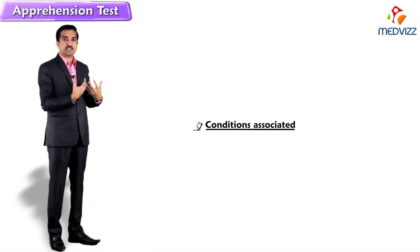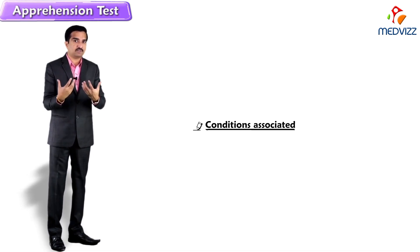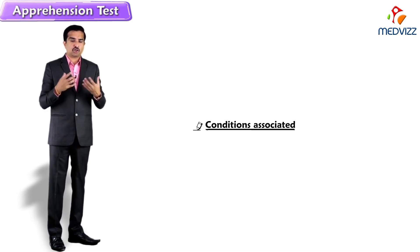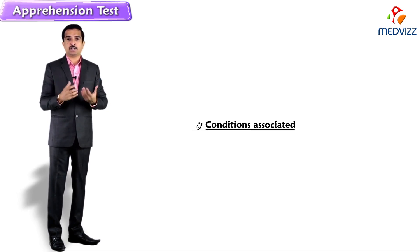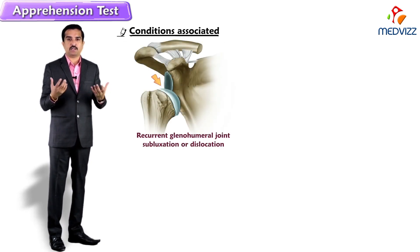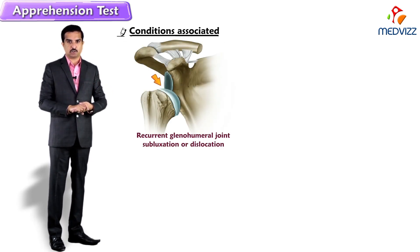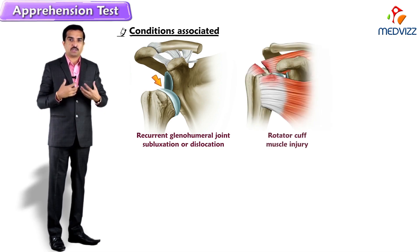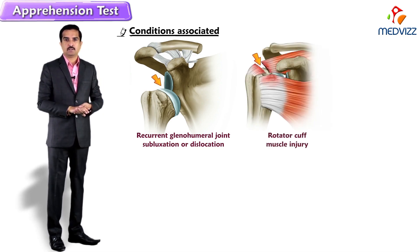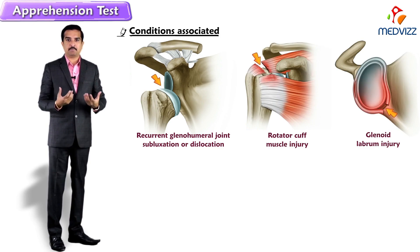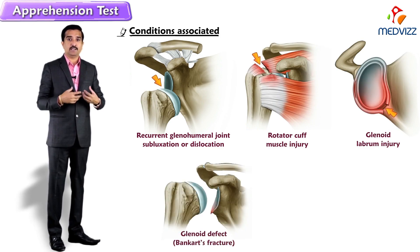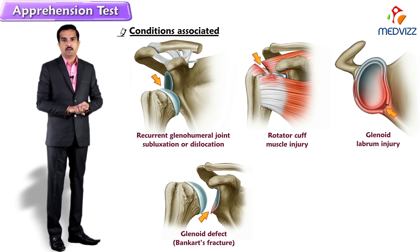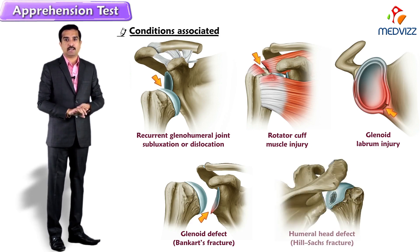What are the conditions associated with positive results? Most commonly traumatic conditions — examples include recurrent glenohumeral joint subluxation or dislocation, rotator cuff muscle injury, injury to the glenoid labrum, or glenoid defect such as a Bankart fracture, or because of a humeral head defect, that is a Hill-Sachs fracture.